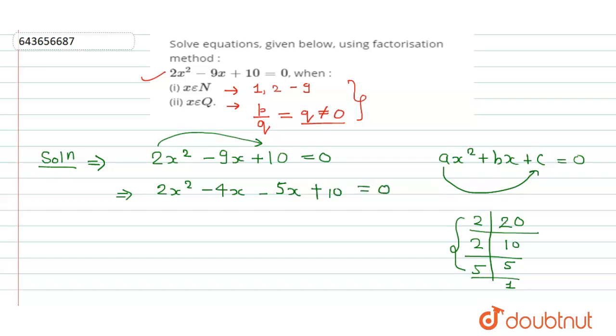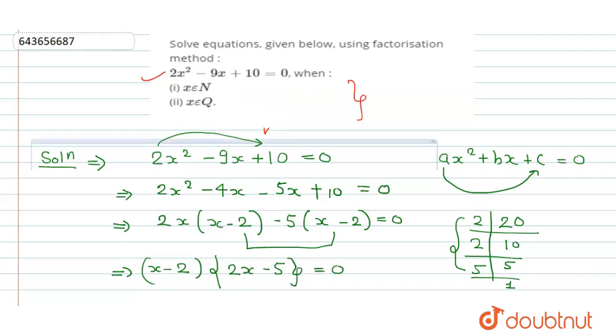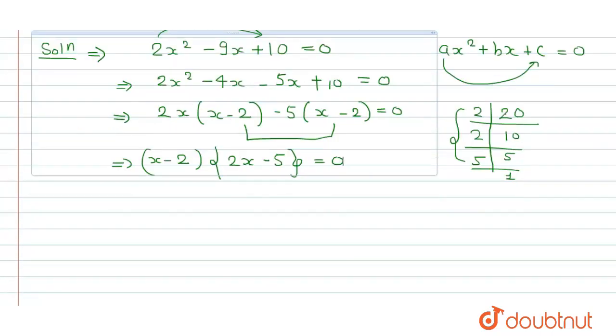Equals to 0. In this way I have made a factorization. Make 2x common here, it will be x - 2. Take -5 as common, it will be x - 2. Here x - 2, x - 2 common. So take x - 2 as common and it will be 2x - 5.